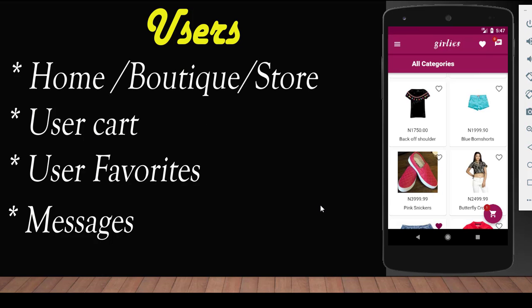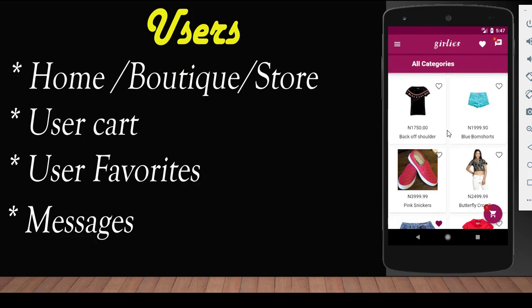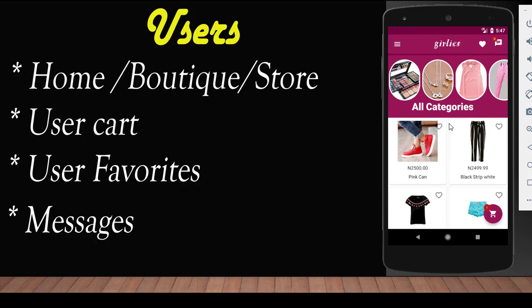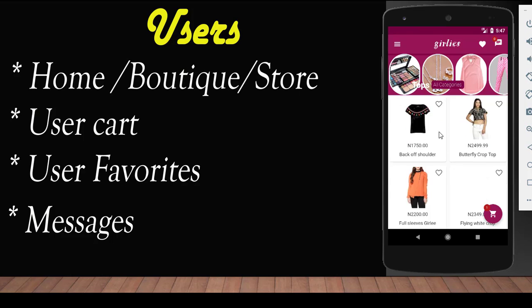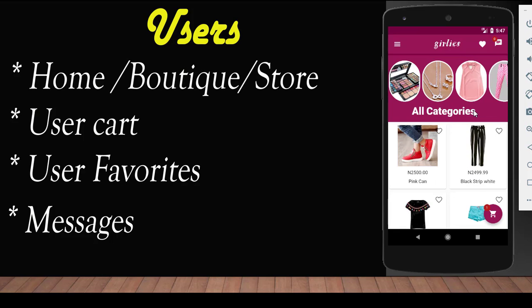The user section has the home screen, also called the boutique or the store. This home screen has a list of categories and list of products the user can add to the cart. The user could select a category to filter — it has a filter where you could filter by category and select all categories back. This is the boutique section on the home screen.